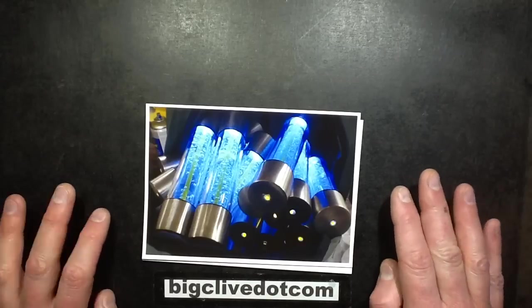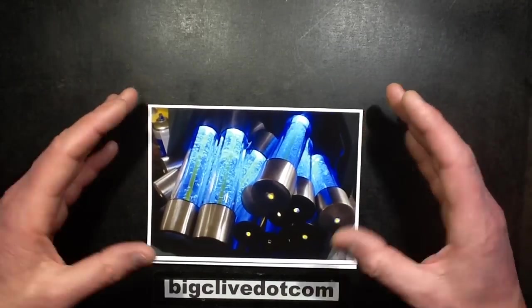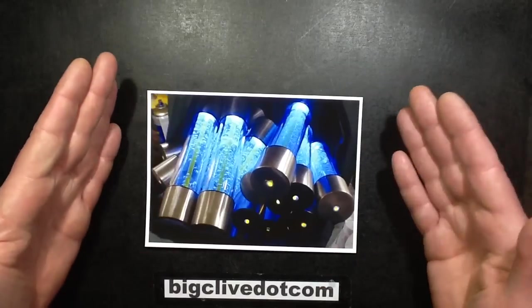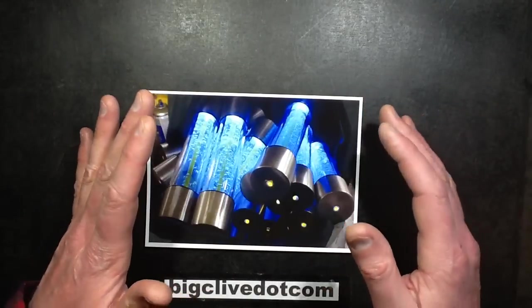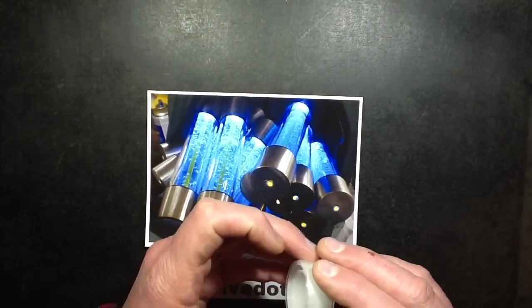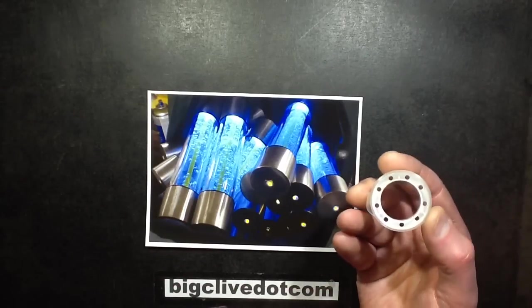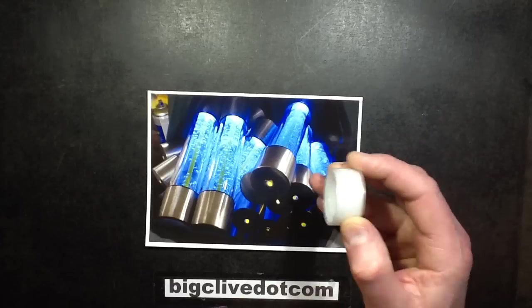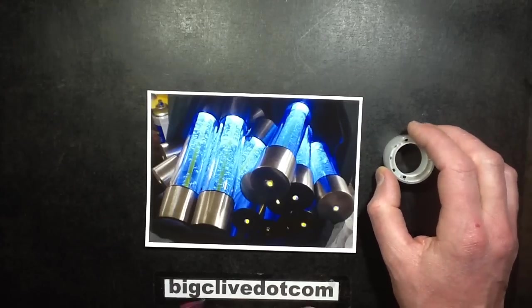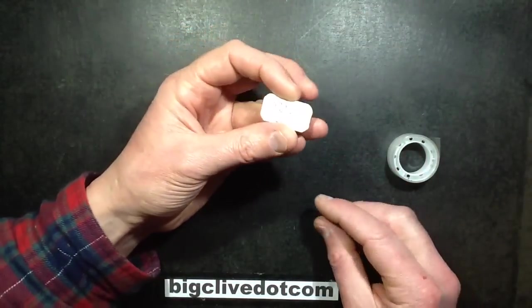They approached me a bit later about putting electronics into these. I prefer it when people approach me right at the beginning so we can design things together to allow for battery space. So I ended up with quite a short deadline to produce them, and a space roughly this size to actually put the electronics in. The only thing I could really think of was a little circuit board like this with a lithium battery in the back.